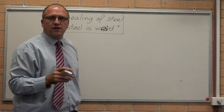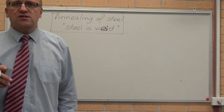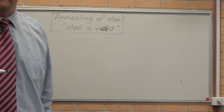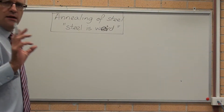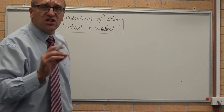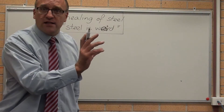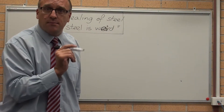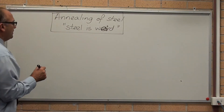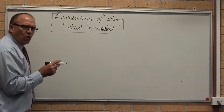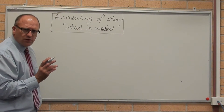Annealing of steel. Remember that steel is weird. Why? Because it has the solid-to-solid transformation — it behaves differently. It's more in the grain structure that's produced.